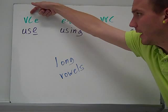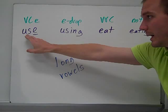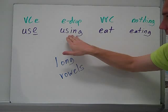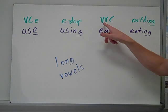In this sort, we're looking at adding -ing to words that have vowel-consonant-e and two vowels in a consonant. These are all going to have our long vowel sounds, like 'use' and 'eat.' Use — you have u, s, e. But to add -ing, you actually have to e-drop, or get rid of the e, and then add -ing. So whenever you see the VCE pattern for long vowels, you need to e-drop prior to adding -ing.